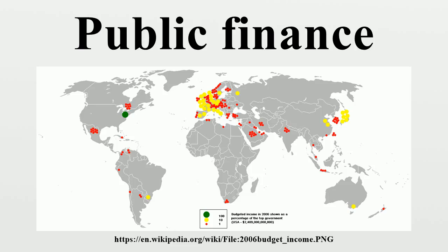Most government budgets are calculated on a cash basis, meaning that revenues are recognized when collected and outlays are recognized when paid. Some consider all government liabilities, including future pension payments and payments for goods and services the government has contracted for but not yet paid, as government debt. This approach is called accrual accounting, meaning that obligations are recognized when they are acquired or accrued, rather than when they are paid. This constitutes public debt.